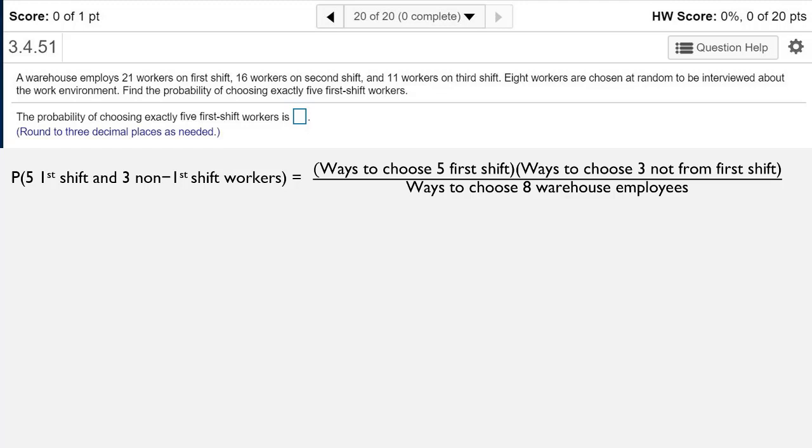So we're choosing the five first shift workers, and then we're choosing the three workers that aren't on the first shift. They're either on the third or the second shift. And then you divide that by the total number of ways that you could just choose eight employees from the warehouse without any restrictions whatsoever.